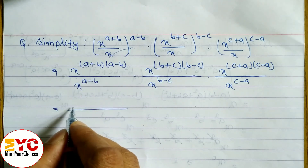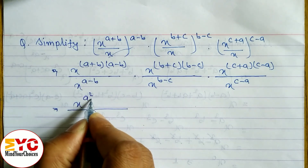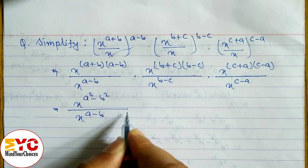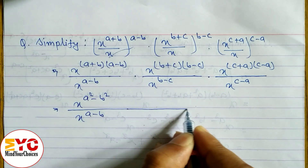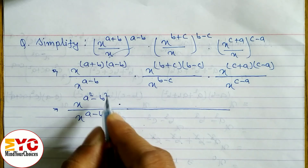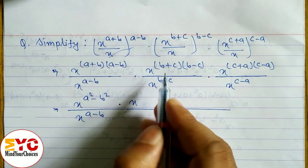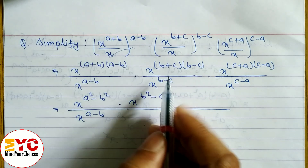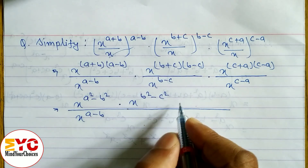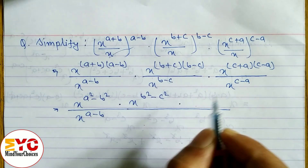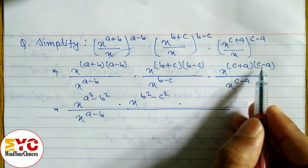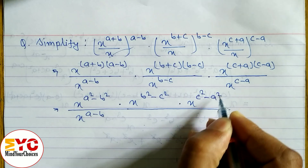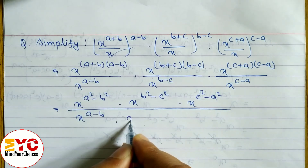Now these are in the form of (a+b)(a-b), so we can write x to the power a²-b². In the denominator, all terms are in multiplication, so we write x to the power b²-c² using the formula (b+c)(b-c). For the last term, x to the power c²-a², and in the denominator we copy the same.